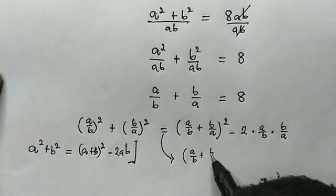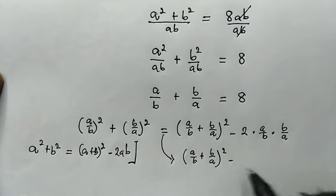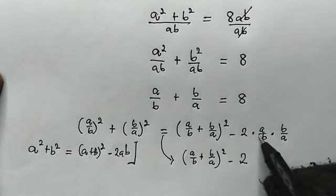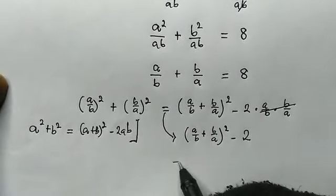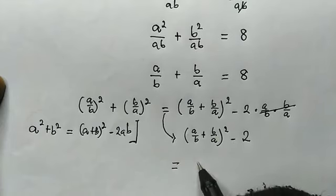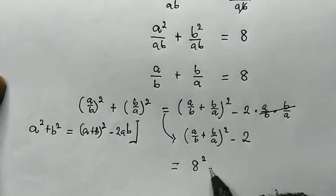And from here we have the solution. Remember, a/b + b/a is 8, so we have 8² minus 2.